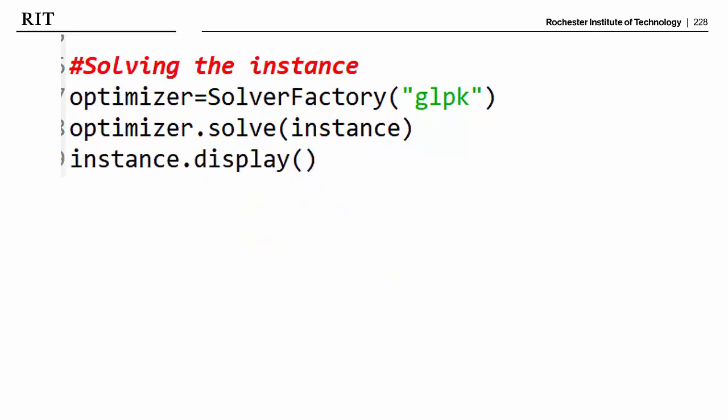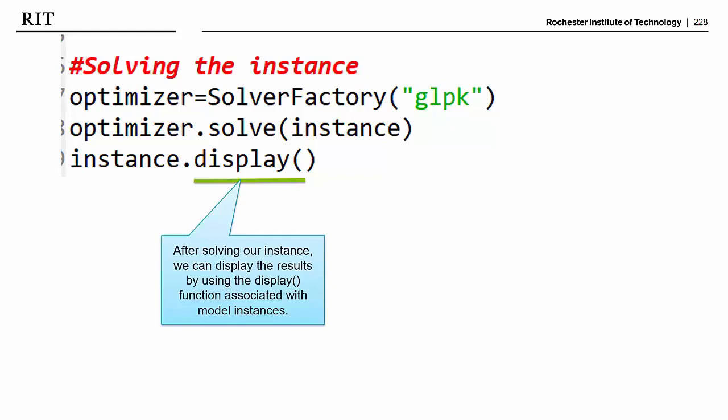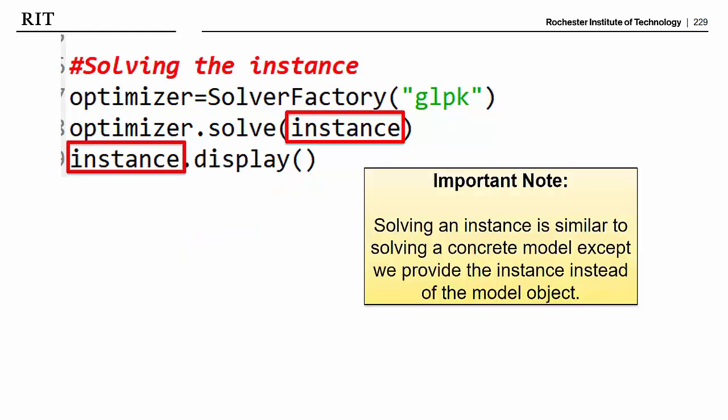And finally, if we want to know what the optimal solution was, we can use this command instance.display, where display will display the results of our optimal solution. An important note here is that solving an instance is very similar to solving a concrete model except for we have to say instance and provide the instance instead of the model object because the model object doesn't have any of the parameters or anything in it until we merge it with the data file.